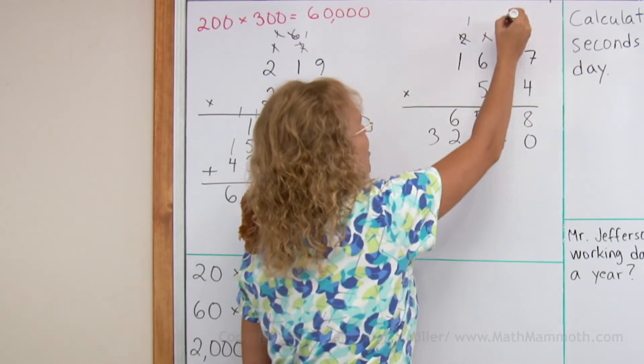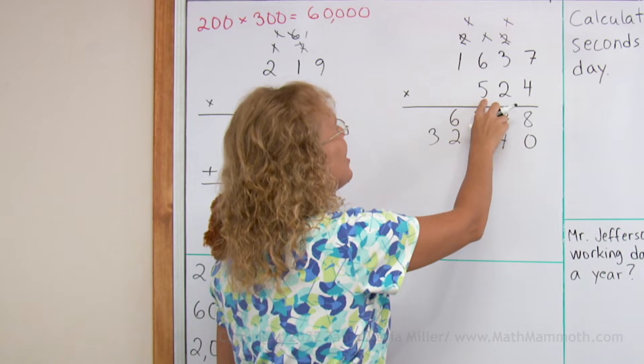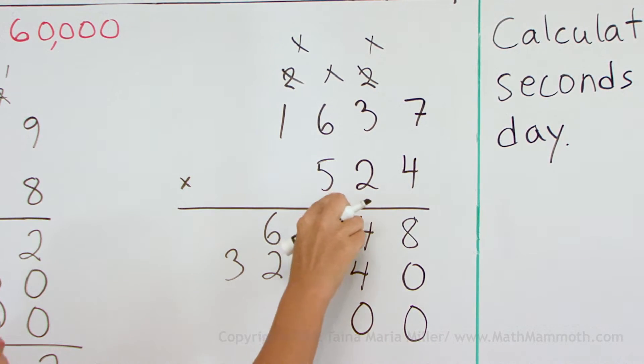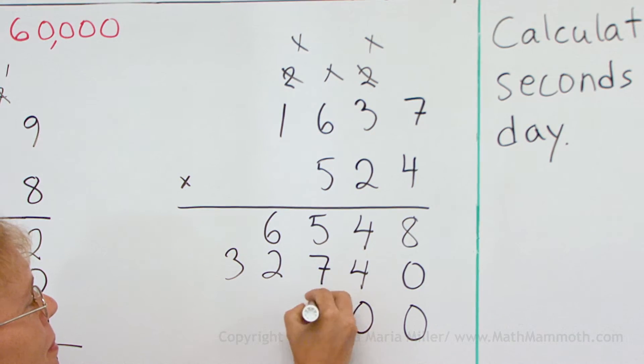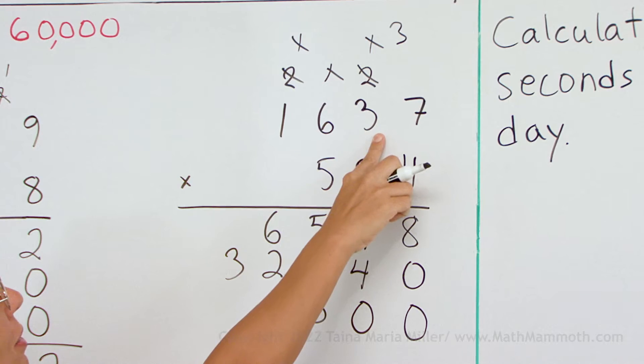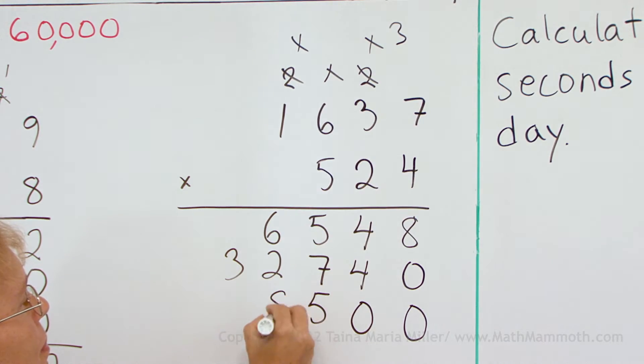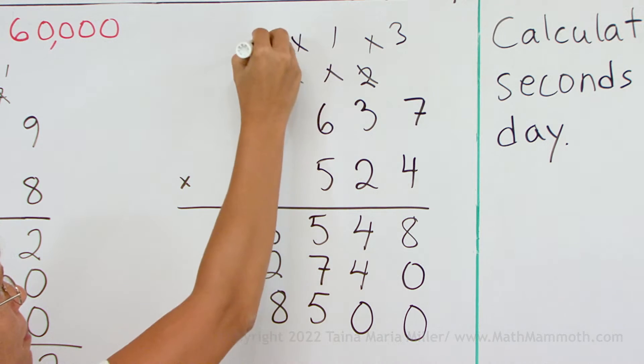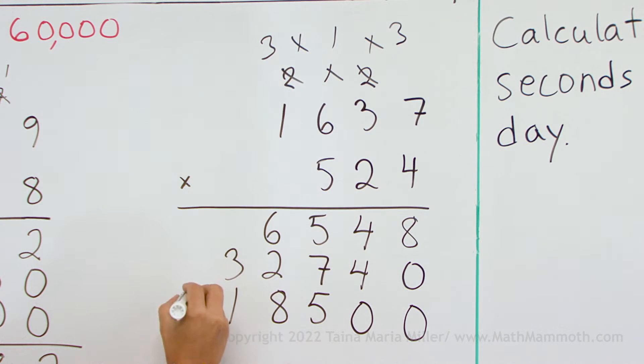And then, okay, I'm going to cross this out again, and then last one, 500 times the number, zero, so two zeros here. Five times seven, 35. Five times three is 15 plus three, 18. And five times six is 30 plus one is 31. And five times one plus three is eight.